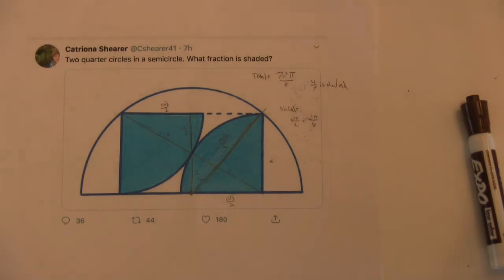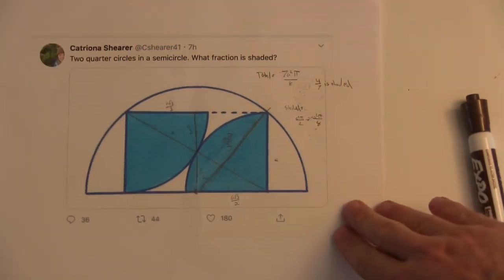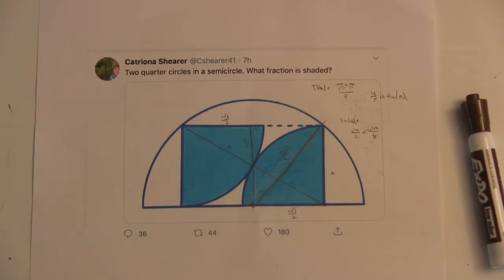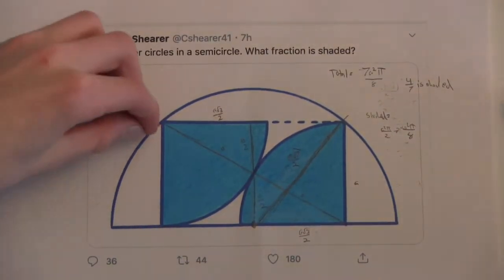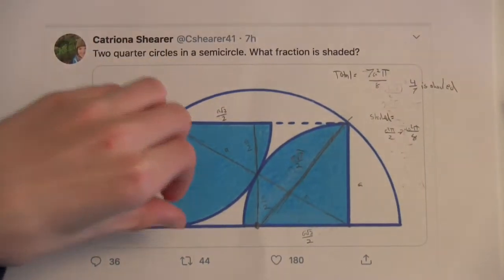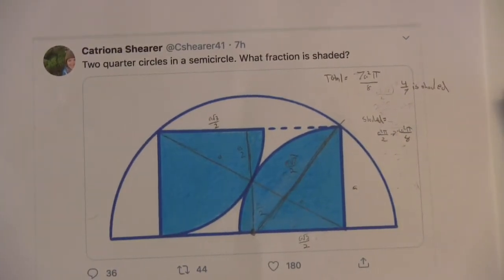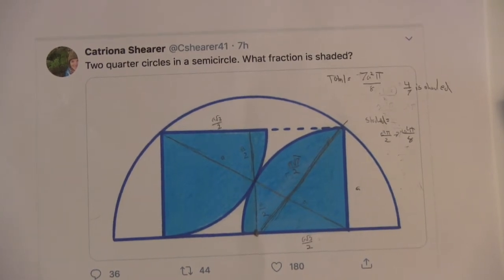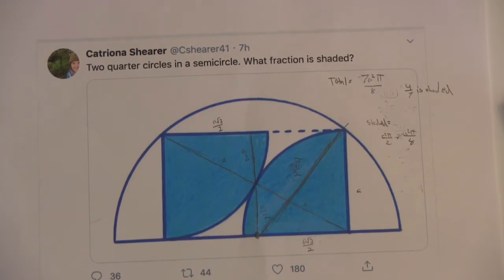All right, so we have two quarter circles that are inside of a semicircle. All right. And so let me just slide it over so it's slightly more in view. Sorry about that. Okay. One quarter touches here, one quarter touches on this flat side. All right. Here. And then we have asked what fraction is shaded of the figure.